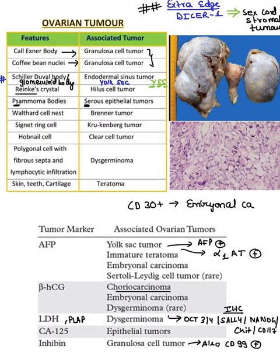Coming on to Brenner's tumor. Brenner's tumor shows two things: one is the Walthard cell nest, and it also shows coffee bean nuclei.